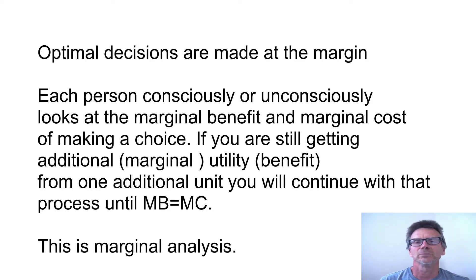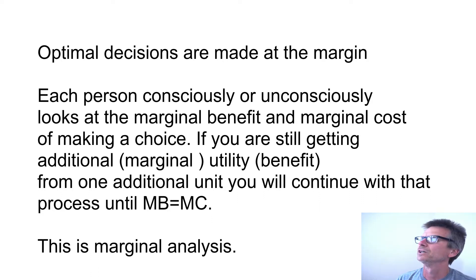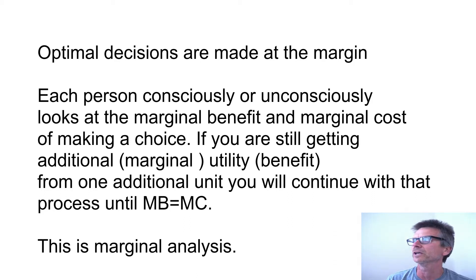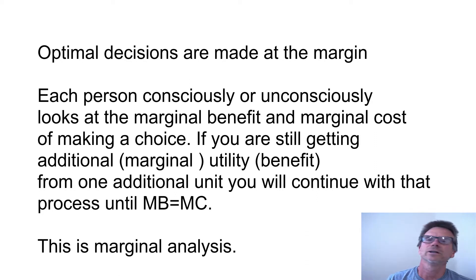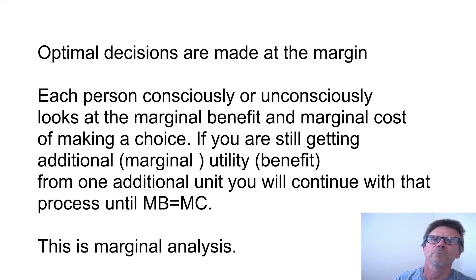Optimal decisions are made at the margin. Of these three assumptions, this is the most complex. 'Marginal' means just the additional — one more added unit. Each person, consciously or unconsciously, looks at the marginal benefit and marginal cost of a choice. If you're getting additional marginal utility from one more unit, you'll continue until MB equals MC — marginal benefit equals marginal cost. That's equilibrium, and this is known as marginal analysis.